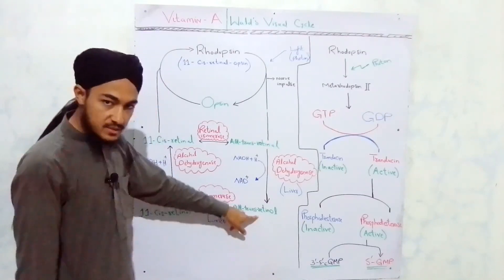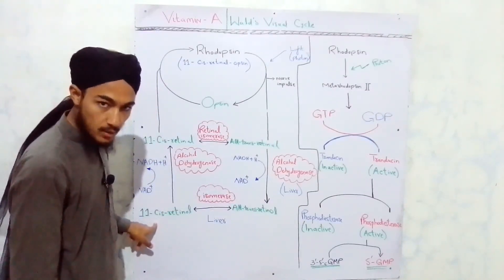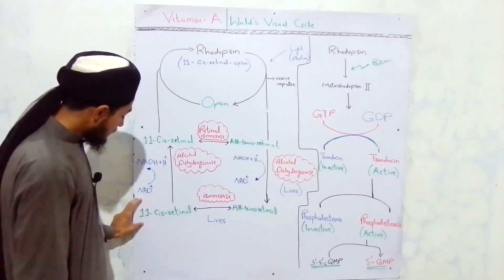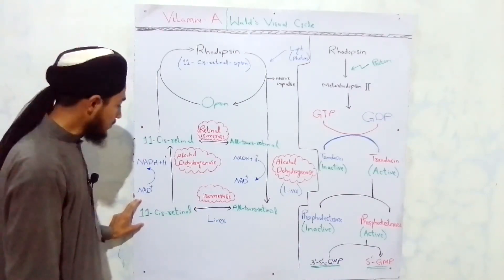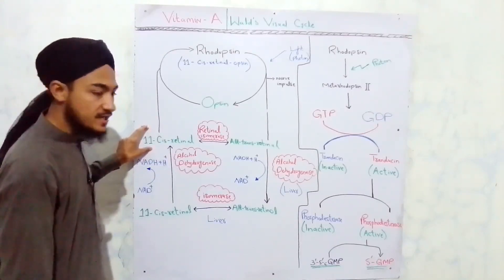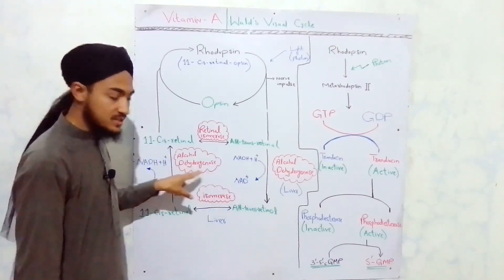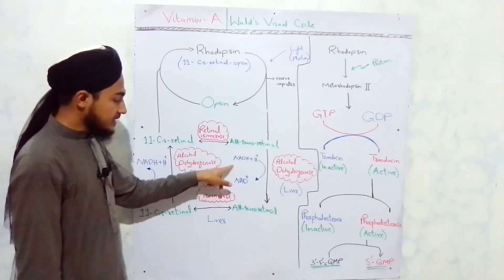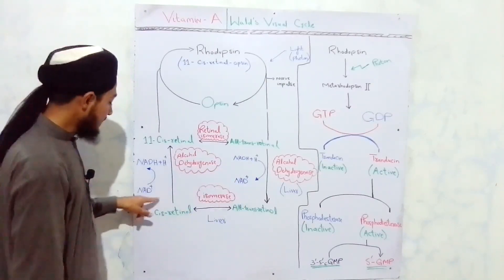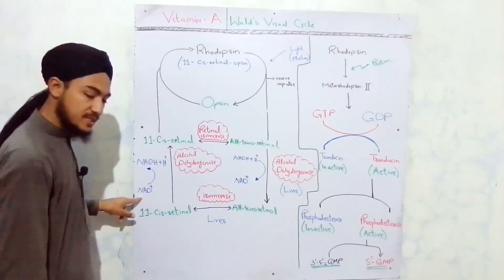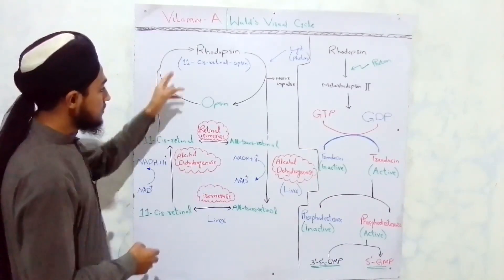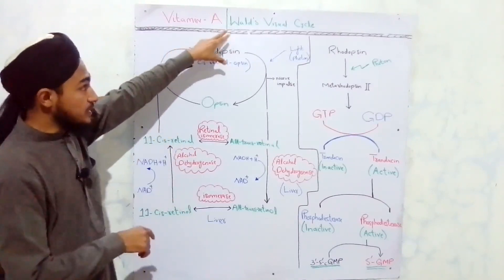In the liver, all-trans retinol is then isomerized to 11-cis retinol by an isomerase enzyme. From there, the 11-cis retinol is converted to 11-cis retinal — the aldehyde form — again by alcohol dehydrogenase. In this step, the NAD+ that was produced in the previous reaction is converted back to NADH.